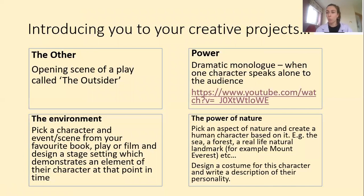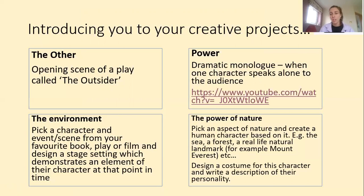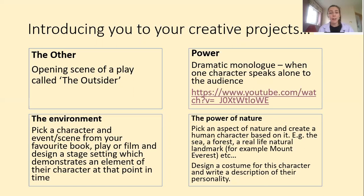Think about which one of those themes really stuck out for you and which really interested you, as there are different theatrical elements involved in each activity. Activity number one, around the idea of the other, asks you — under the title of a play called The Outsider — to come up with your opening scene. If you're struggling for ideas, you can use characters from The Tempest, perhaps characters we haven't heard much from, and it could be set at a point after the play ends.